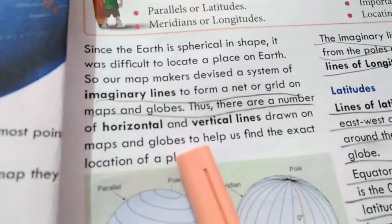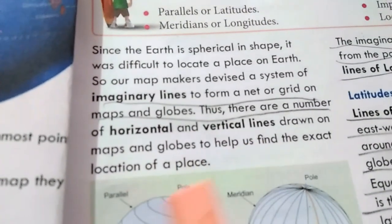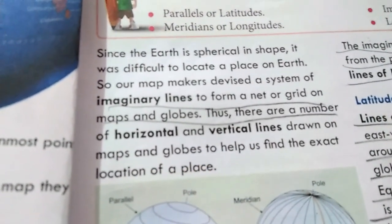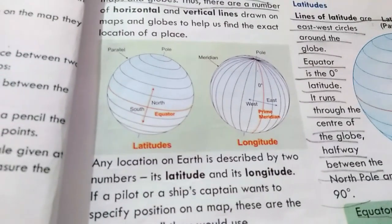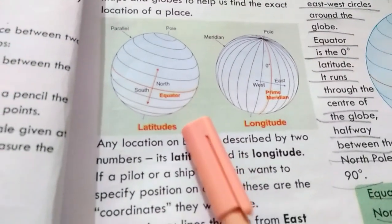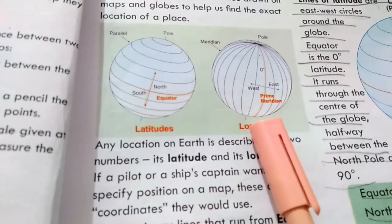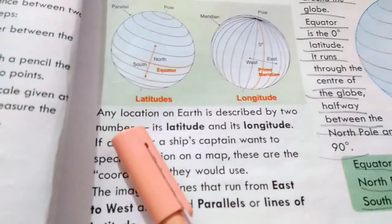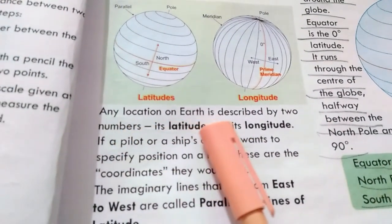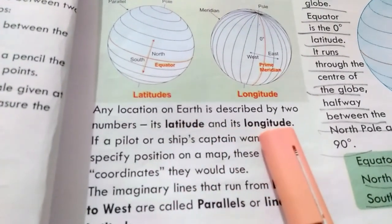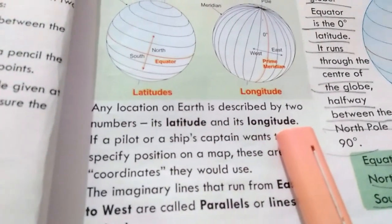We can draw horizontal and vertical lines on maps and globes so that we can find the exact location of any place. The location of any place on earth is described by two numbers: its latitude and its longitude.